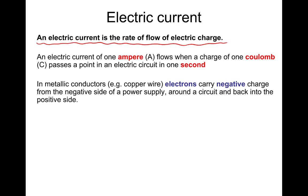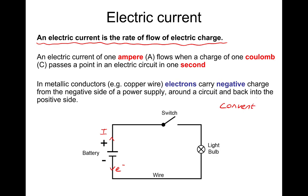So metallic conductors, example copper wire, electrons carry negative charge from the negative side of a power supply, around the circuit, and back to the positive side. So the electrons would actually go this way. I'll just put E minus. However, in your, when you do your calculations and in your diagrams and the questions that you'll get in an exam, electrical current is given as positive to negative. So the current is this way. Current symbol is I. We'll do that in a moment. So it's the opposite of what you think it might be. And it's called conventional current. So positive to negative is called conventional current.